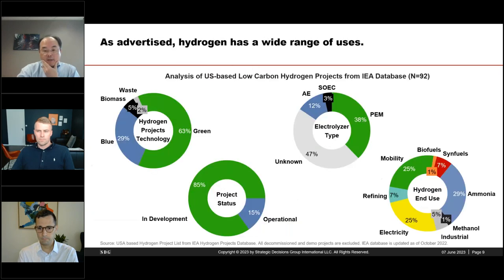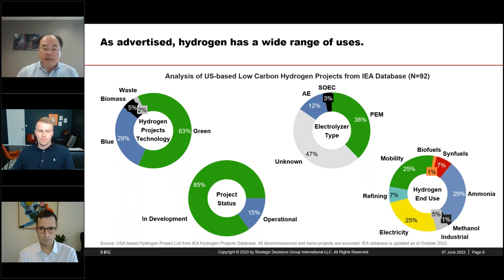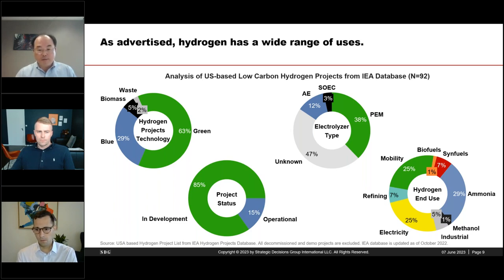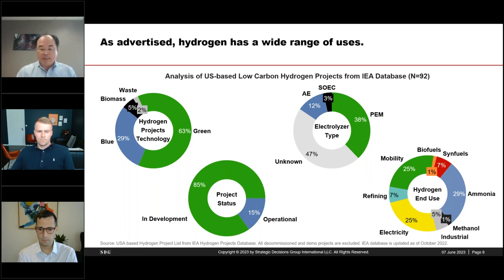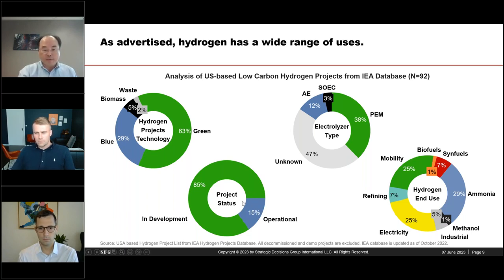One more slide on US activities: the IEA Hydrogen Projects Database is a worldwide low-carbon hydrogen project source. Trimming it to US-only projects, excluding decommissioned or demonstration-stage projects, we found 92 such projects. The data was last updated in October 2022, but I wouldn't be surprised if the number increases dramatically with the next update. An interesting statistic: green hydrogen accounts for about two-thirds of activities in the US, and not surprisingly most projects are under development rather than operational.